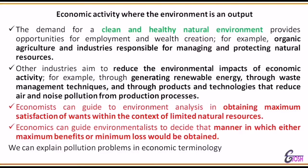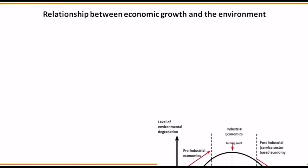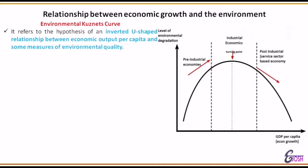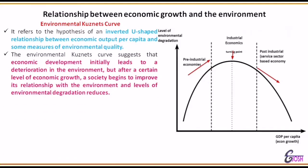The relationship between environment and economy can be presented through a diagram using the Environmental Kuznets Curve. It represents an inverted U-shaped relationship between economic output per capita and measures of environmental quality. The Environmental Kuznets Curve suggests that economic development initially leads to deterioration in the environment, but after a certain level of economic growth, a society begins to improve its relationship with the environment and the level of environmental degradation reduces.